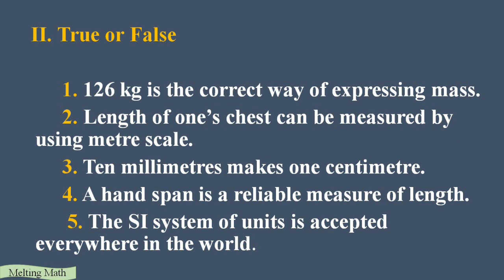Next section: True or False. First question — 126 kg is a correct way of expressing mass. Yes, it is a correct way, so it's True. Second one — length of one's chest can be measured using a meter scale. No, we use a measuring tape to measure the length of the chest, so this is False. Third one — 10 millimeters makes one centimeter. Yes, so it's True.